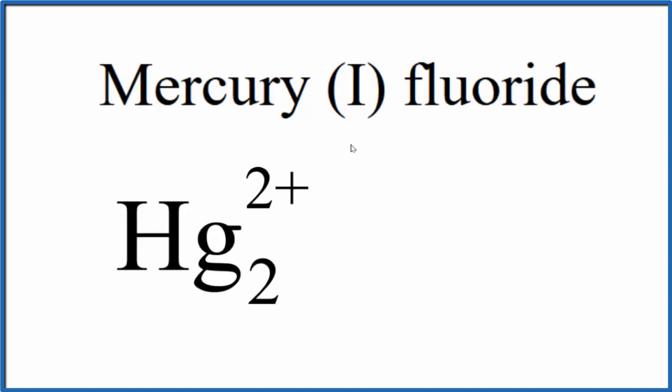And then for fluoride, that's fluorine on the periodic table. Fluorine forms ions that are 1-. We need to have these charges balanced—this is a neutral compound, it doesn't say ion after it.